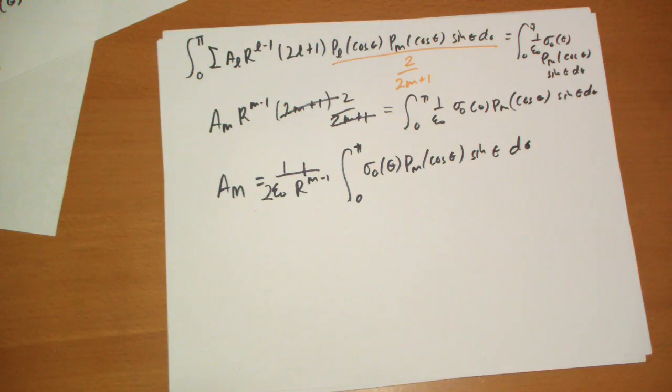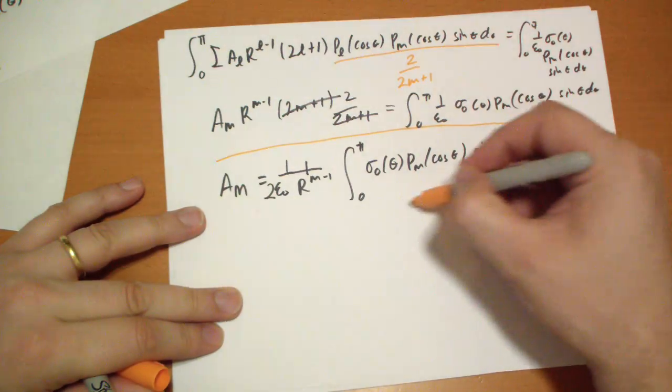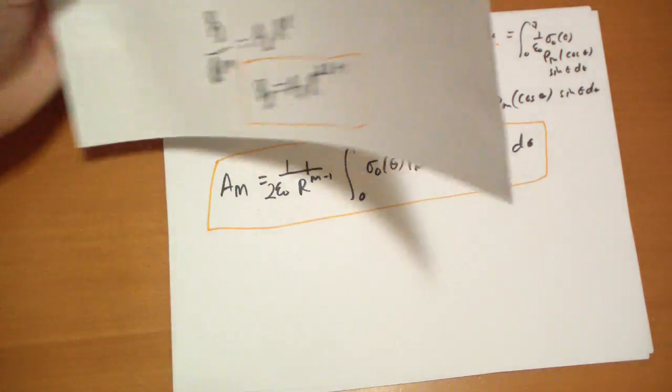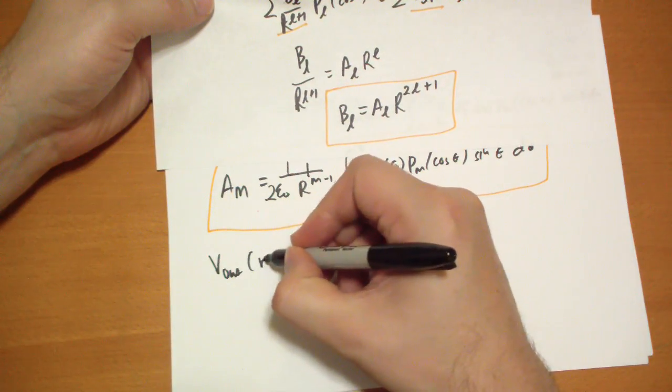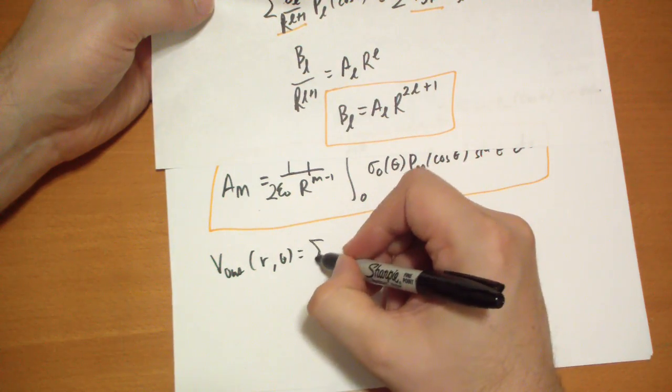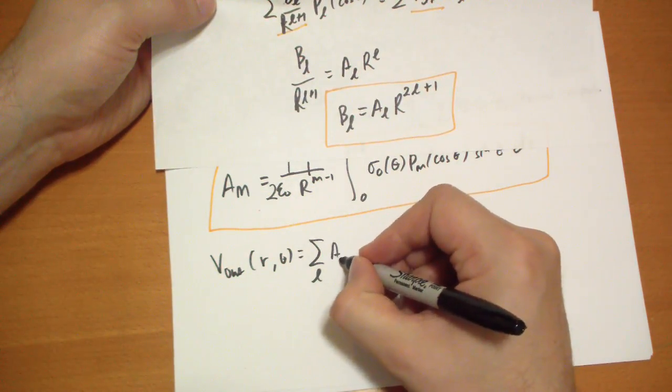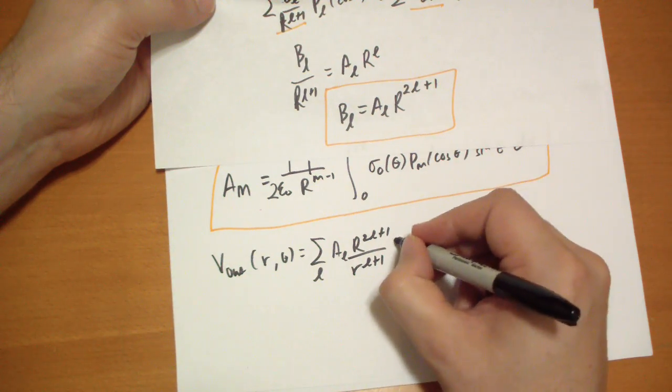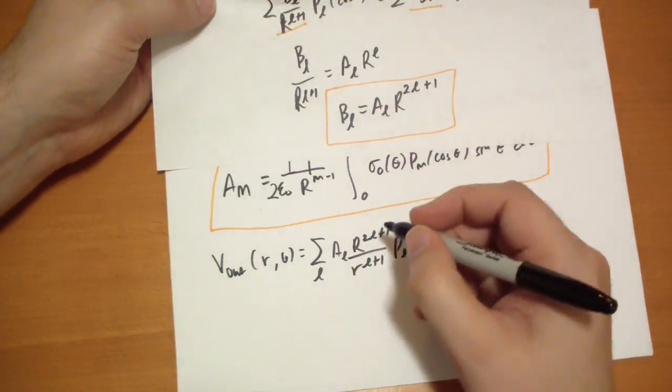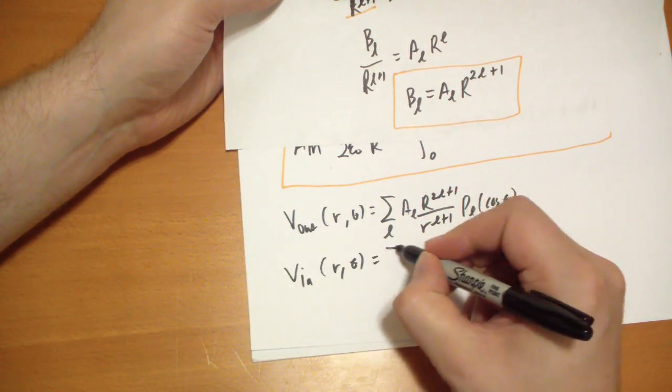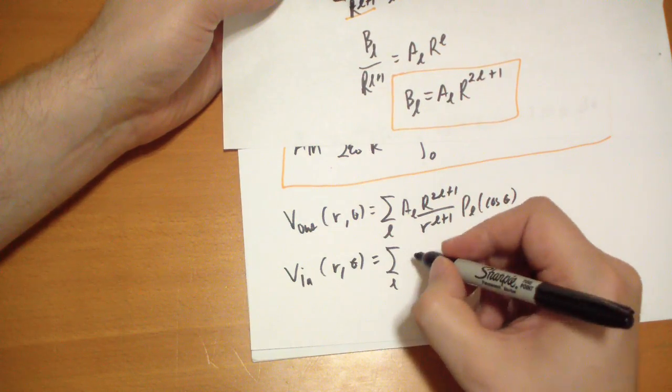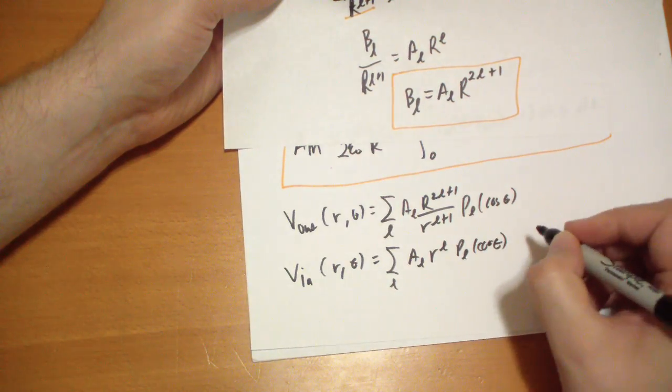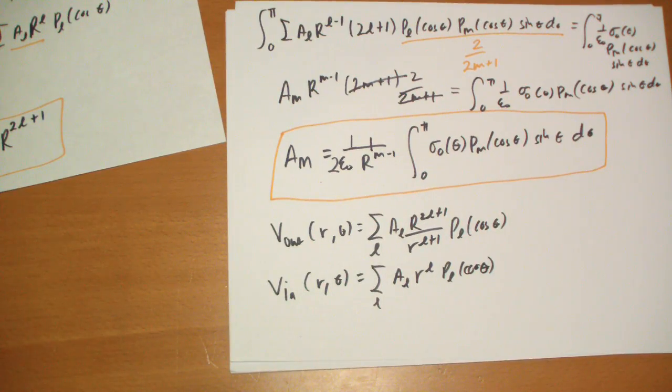Alright, so we've calculated all of our terms. That's how we calculate the constants. Our functions are: V_out equals the sum over L of A_L*R^(2L+1) over r^(L+1) times P_L(cos theta). And our V on the inside equals the sum over L of A_L*r^L*P_L(cos theta). That is a complete solution for this problem. We've basically solved it for any sigma-naught that they can throw at us.